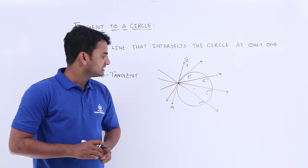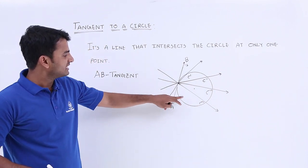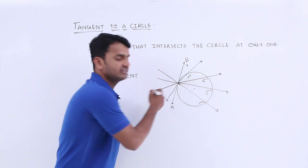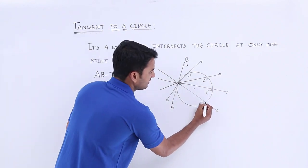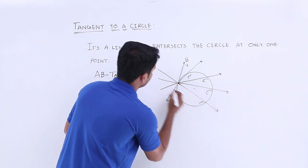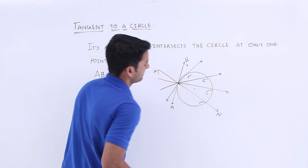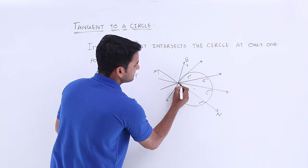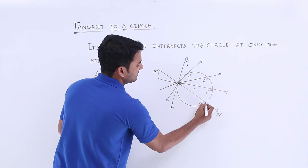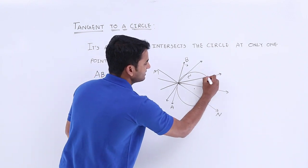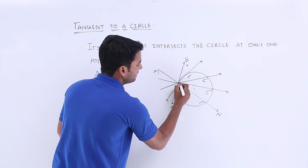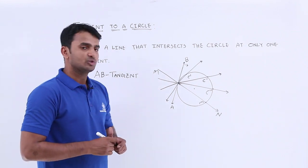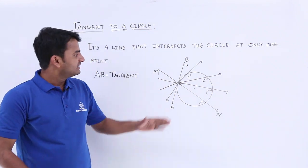We can also say that a tangent is nothing but a special case of a secant where the two contact points are coinciding with each other. If you observe this secant — every time the distance between the two contact points is decreasing, and at one particular point these two intersecting points coincide with each other, at which point it becomes a tangent.